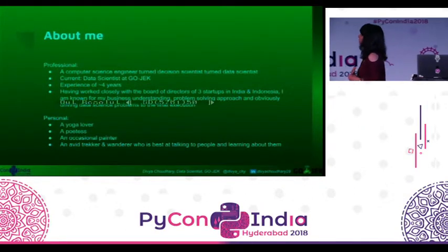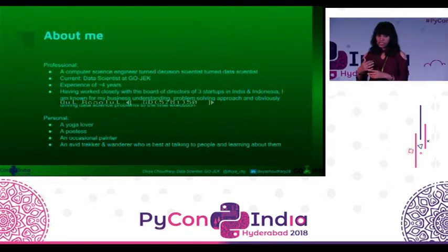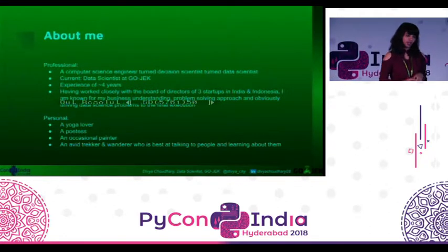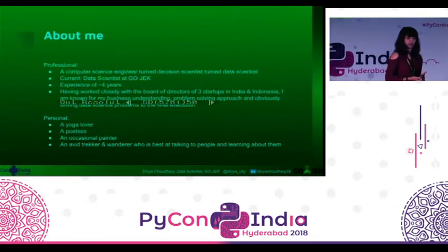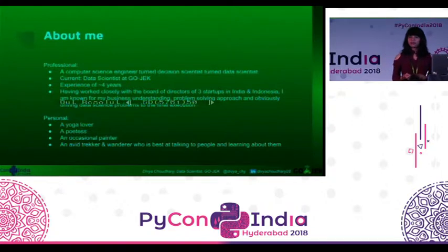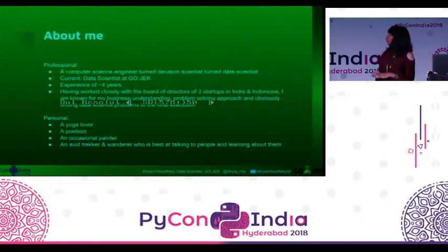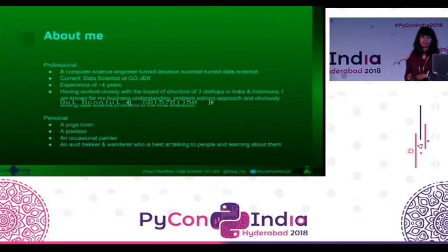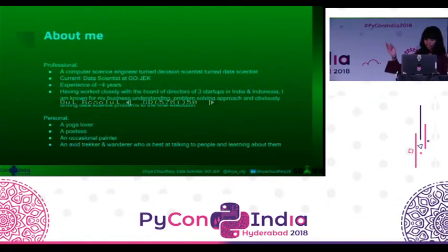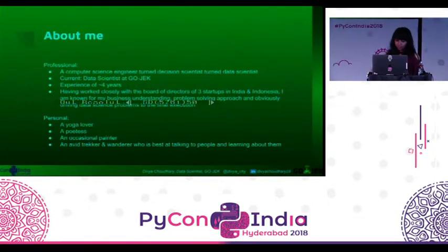So before I go ahead, something about me. I am a computer science engineer, started my career as a decision scientist, and now I am a data scientist at Gojek. I have a complete experience of four years — things that you can read about me personally.